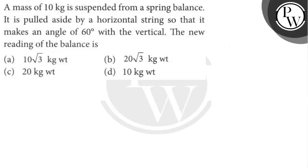Hello, let's read the question. The question is: a mass of 10 kg is suspended from a spring balance. It is pulled aside by a horizontal string so that it makes an angle of 60 degrees with the vertical. The new reading of the balance is to be found.